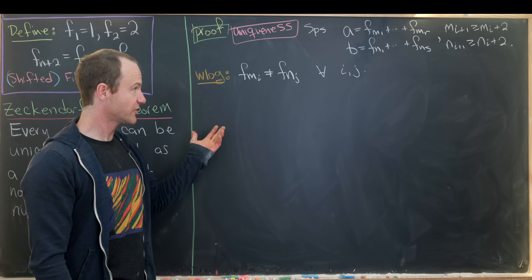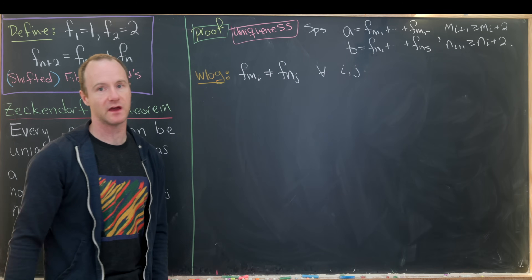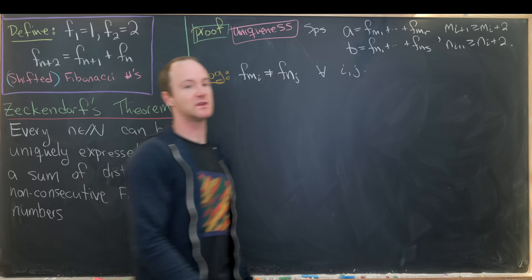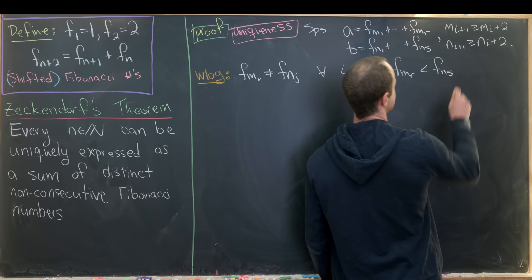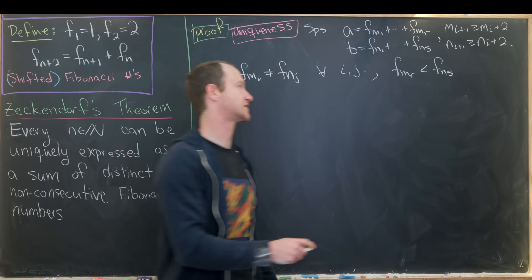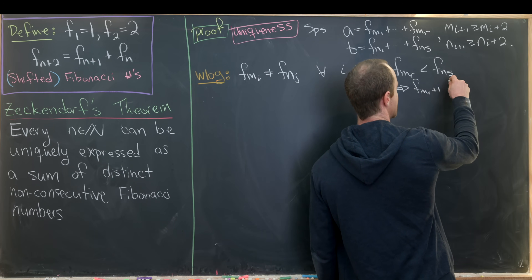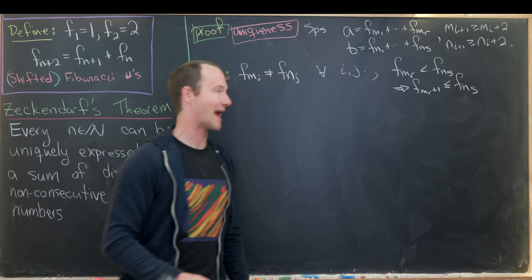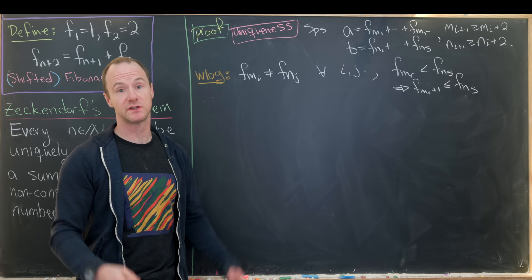We can also assume without loss of generality that one ends at a larger Fibonacci number than the other — they can't end at the same one since the lists are disjoint. Assume Fmᵣ is less than Fns. We push this to the inequality Fmᵣ₊₁ ≤ Fns, meaning the Fibonacci number immediately after Fmᵣ is at most Fns. This is our setup for finishing the proof.